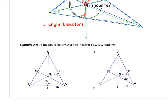In figure 4, N is the incenter of triangle ABC. Find ND. Anytime you have an incenter, draw the circle inside the triangle. The circle helps you find all of the radii — a radius goes from center N to the side of the triangle, perpendicular. So we have radius NF, radius NE, and radius ND. All radii are congruent. If NF is 13, that means NE is 13, and ND is also 13.